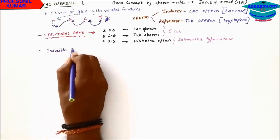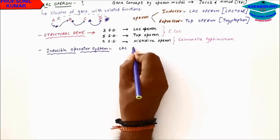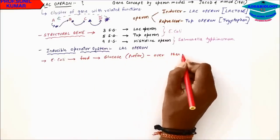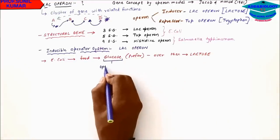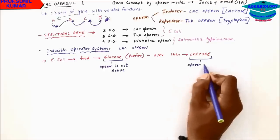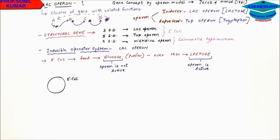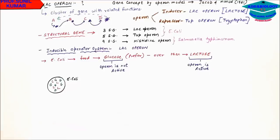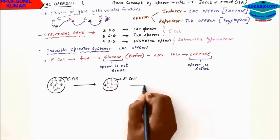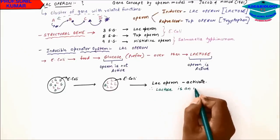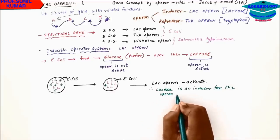The inducible operon system is nothing but the lac operon. E. coli will always prefer glucose as food, but if glucose is not available, it can use lactose. While using glucose, the operon is not active, but while using lactose, the operon is active. If both glucose and lactose are present in equal proportion, E. coli will eat all the glucose first; once glucose decreases, it starts feeding on lactose, and at that point the lac operon gets activated. Therefore, lactose is an inducer for operon activation.